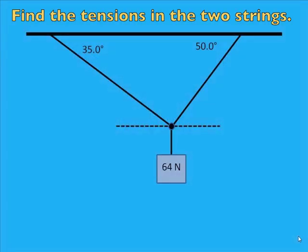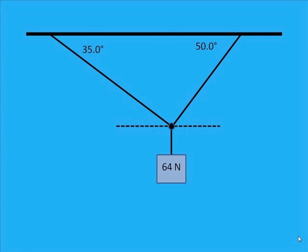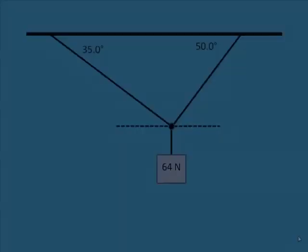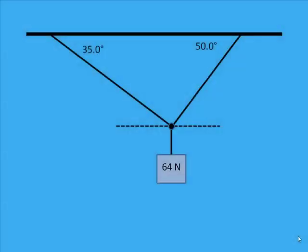Here's a question. We want to find the tensions in the two strings. First of all, we draw a free body diagram. We will call this string T2 — you could call it T1, it doesn't matter — and the tension in this string we'll call T1. And we have the weight acting down.